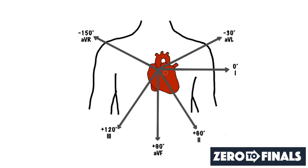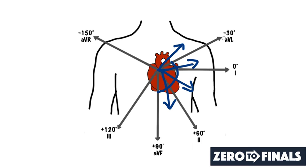The normal cardiac axis is from minus 30 through to 90 degrees — all of that is normal. The general electrical activity can be travelling in various directions within that range. When it's rotated out of the normal range — past minus 30 — that's left axis deviation, and past 90 degrees is right axis deviation.